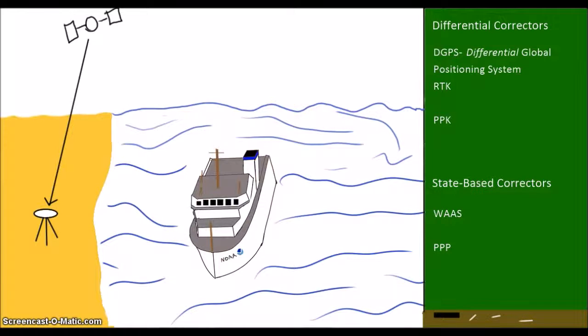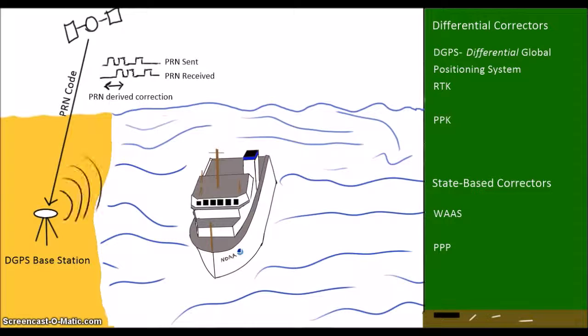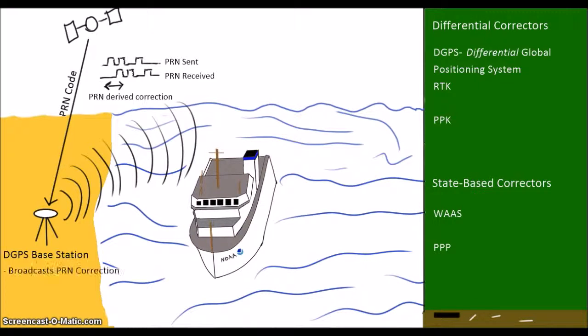DGPS is a differential system installed and operated by the U.S. Coast Guard. This system has a number of base stations permanently installed all around the coast of the United States. DGPS works by measuring and then broadcasting corrections to the positioning signal, the PRN code, sent out by the satellites.